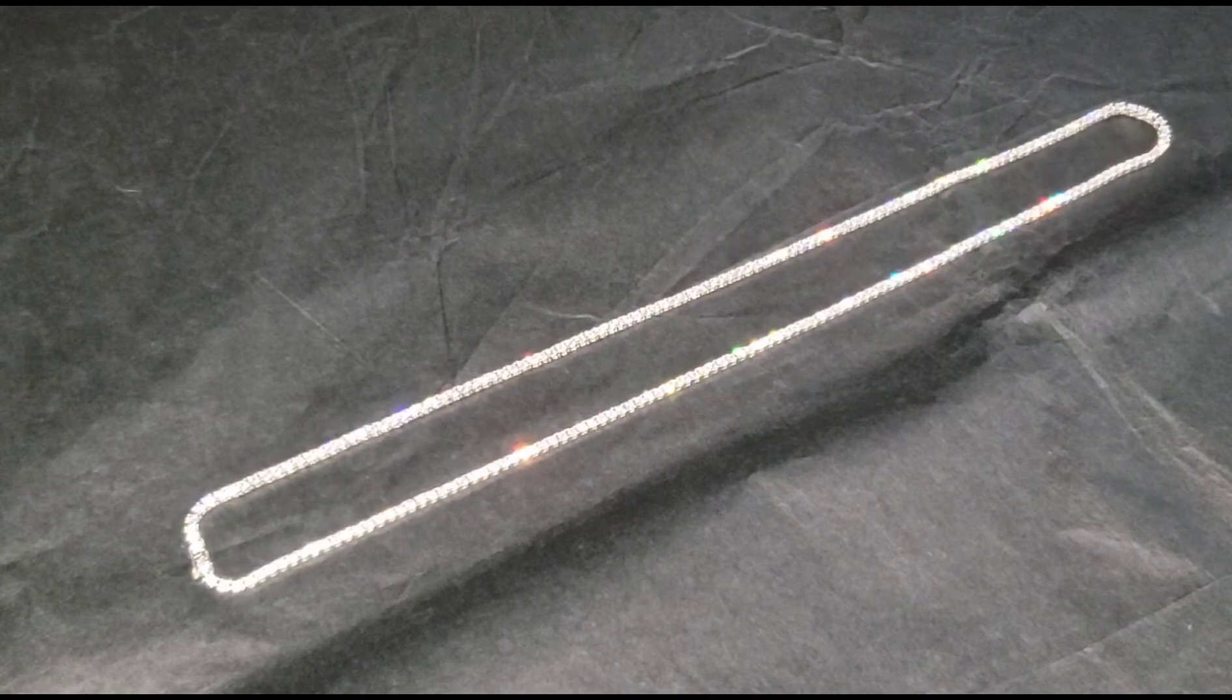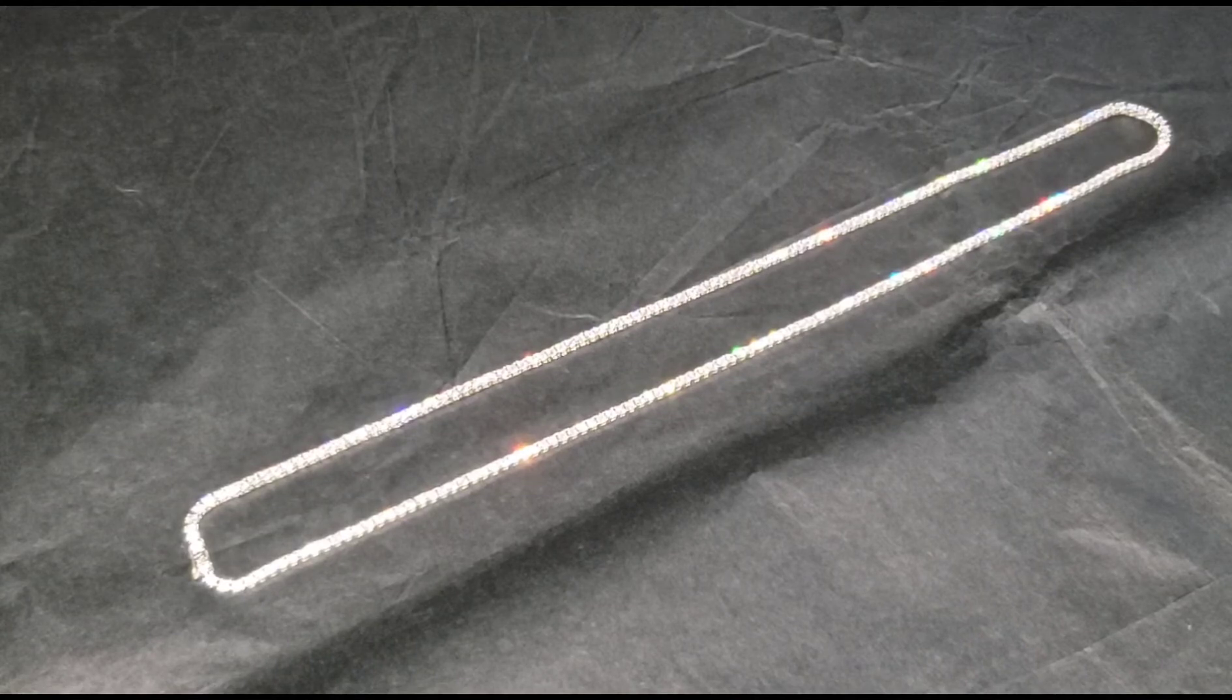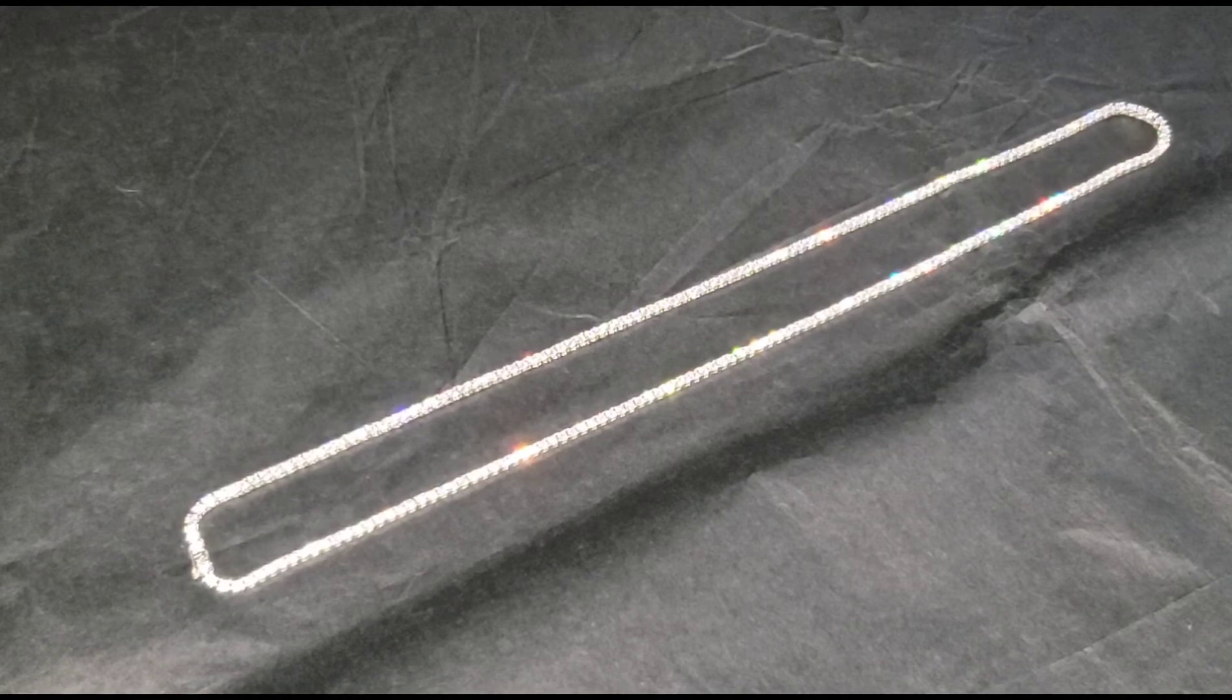What's going on guys, it's your boy the King of Silver. What you're looking at is the solid silver, fully iced out 2mm micro tennis chain. Now let's take a closer look at the detail.